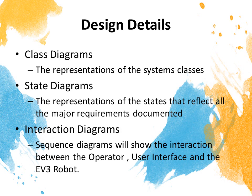About the design details, we will explain about three types of diagrams. Class diagrams, which are the representations of the system classes. State diagrams, the representations of the states that reflect all the major requirements documented. And the interaction diagrams — sequence diagrams will show the interaction between the operator, the user interface, and the EV3 robot.